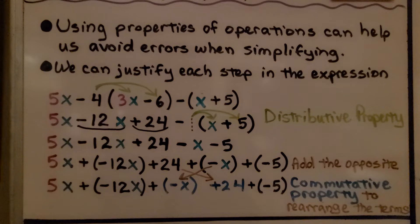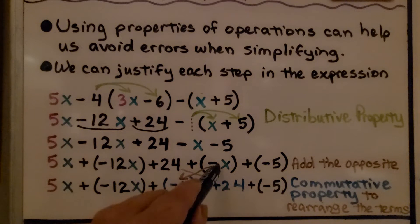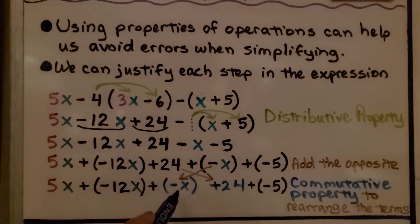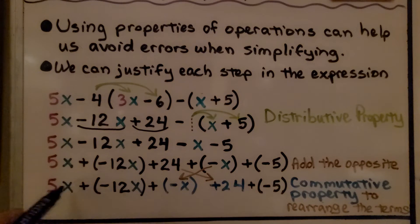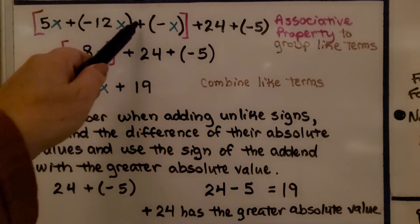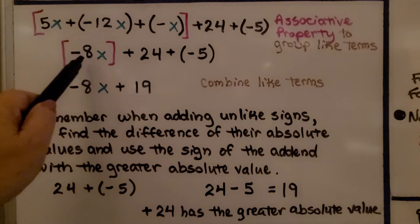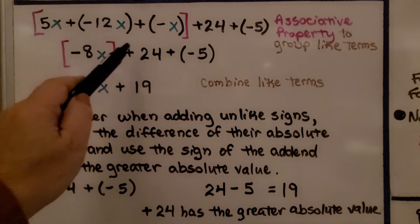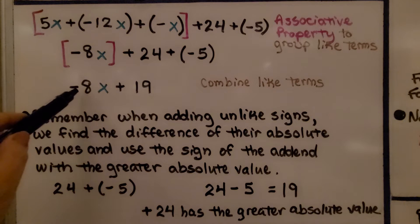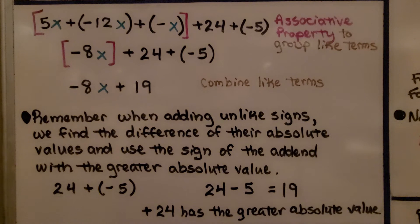Now we can use the commutative property to rearrange the terms. We move the negative x over here and the positive 24 over here. If we move the negative x next to the other x terms, we can group them and combine them. 5x plus negative 12x plus negative x gives us negative 8x. Now we have positive 24 plus negative 5, giving us negative 8x plus 19 when we combine like terms.